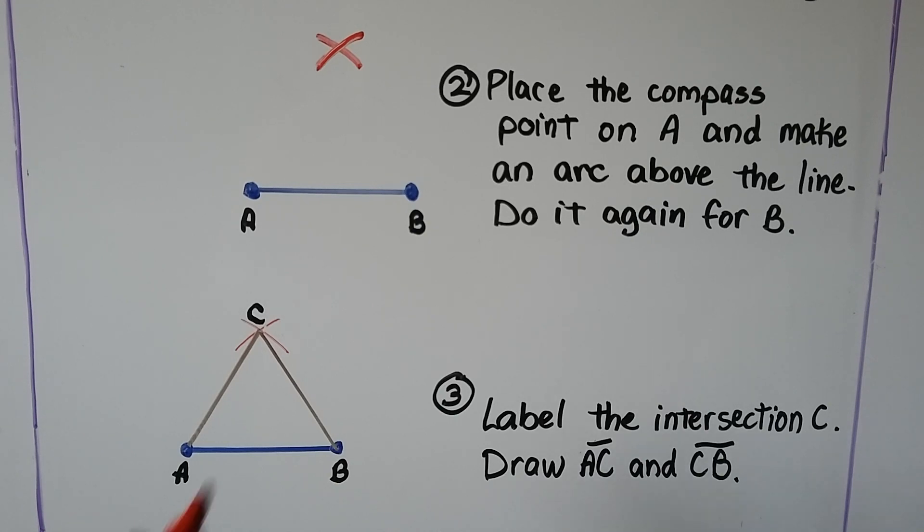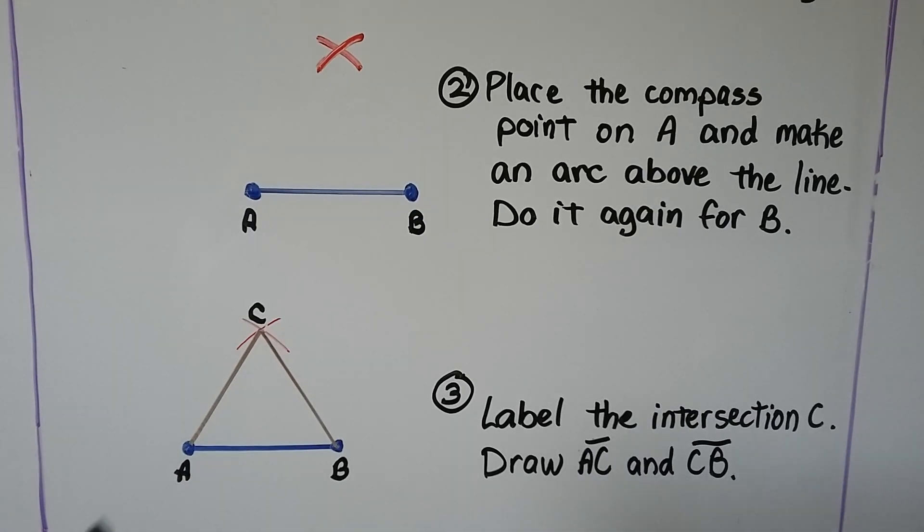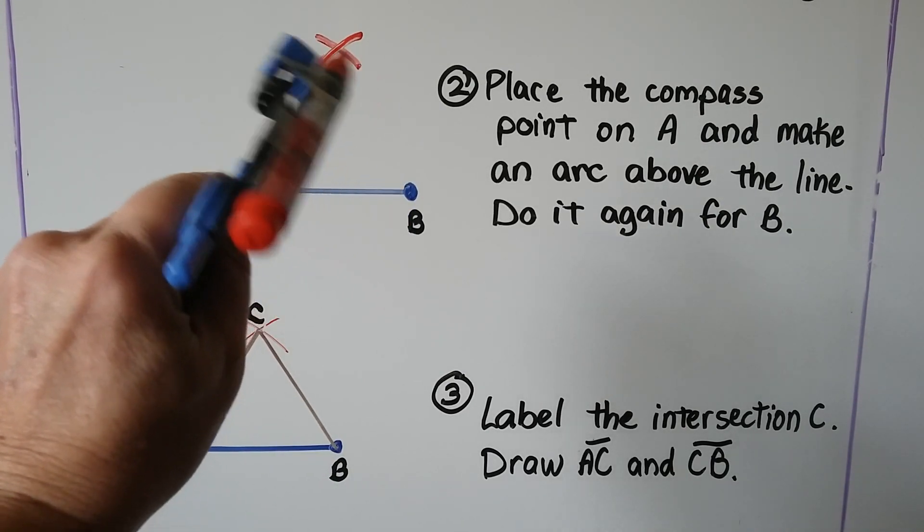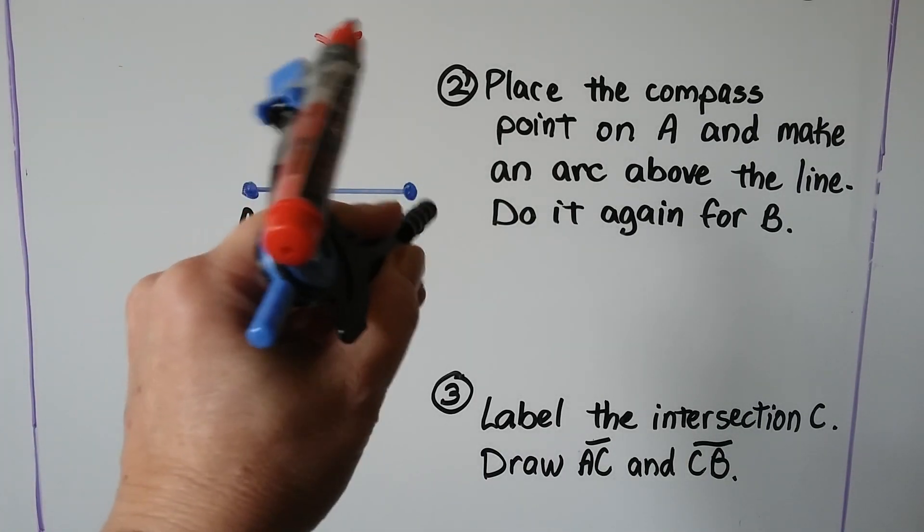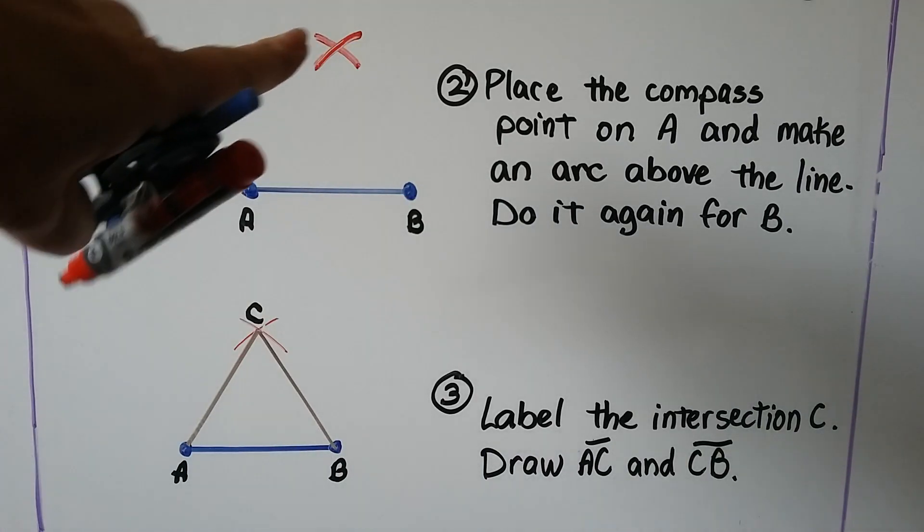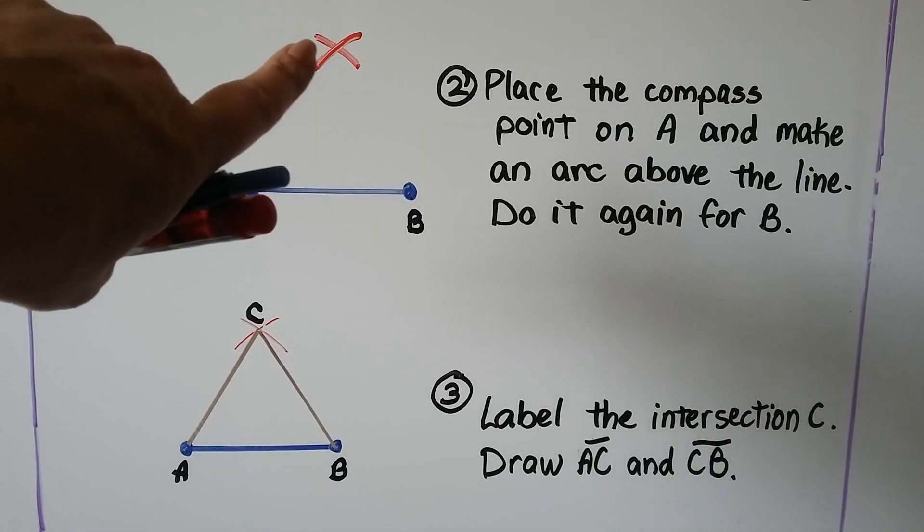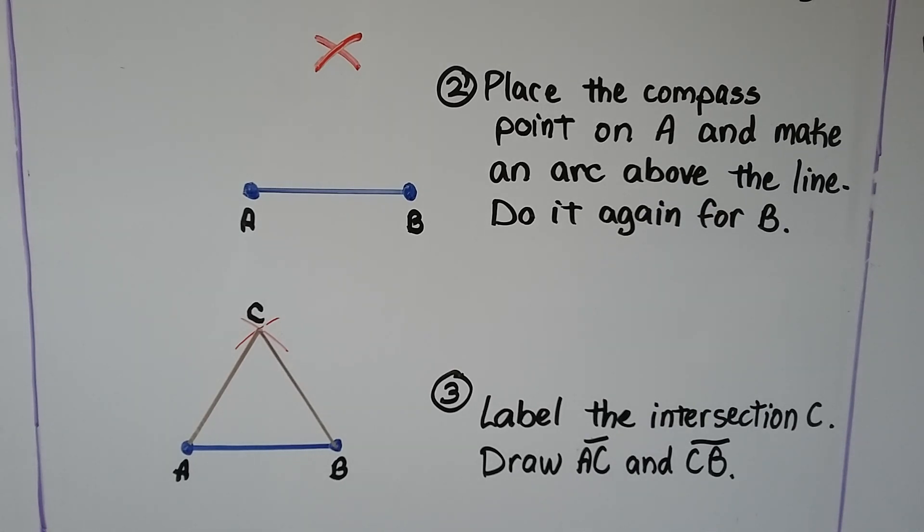Now all we have to do is, because we have this setting, we can place the compass point on A, like this, and we can draw a little arc up here. And we do it again for B. We make a little arc. And where they cross each other, we can label as C. Then all we have to do is draw AC and CB and we have our equilateral triangle.